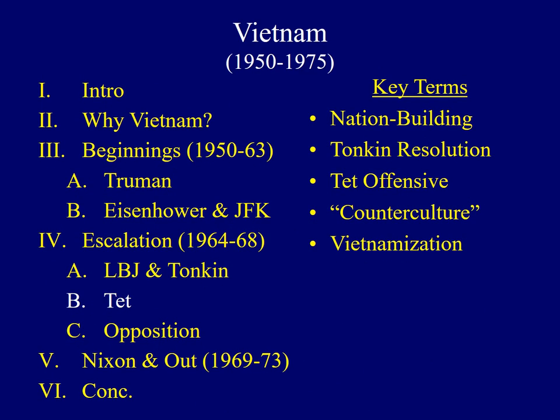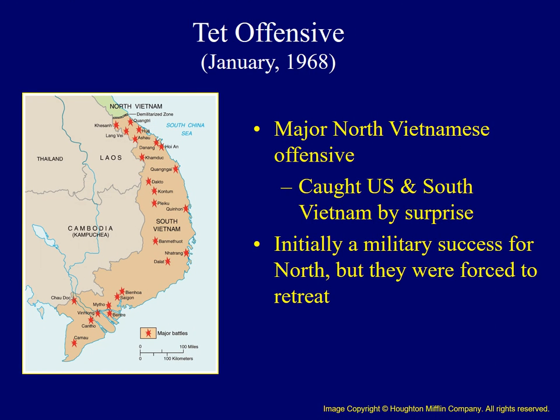The Tet Offensive had a major impact on the course of the war. It took place in late January of 1968, and was a major offensive by the North Vietnamese, who attacked about 100 important cities in South Vietnam. This initially was quite successful, catching the Americans and South Vietnamese completely by surprise, with high casualty rates. After about a month, however, Communist forces were repulsed and eventually pushed back to their original positions — a military defeat for the North.